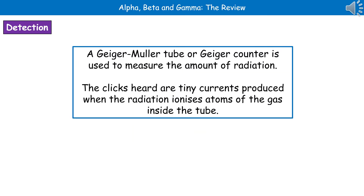If we want to record the amount of radiation being given off by a material, we use something called a Geiger-Müller tube or Geiger counter. It records the amount of radiation and gives us audible clicks. You may have seen this in the lab at school, where your teacher held different samples in front of the tube and you could hear clicks. Those clicks are tiny currents produced when the radiation ionizes atoms of the gas inside the tube.